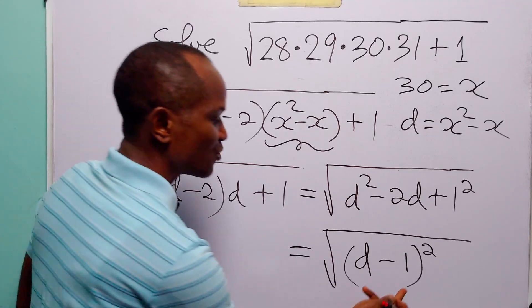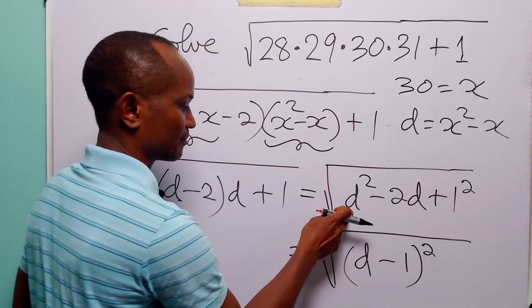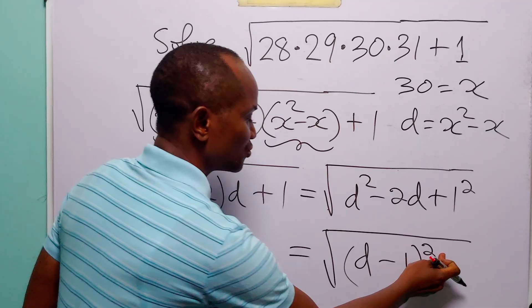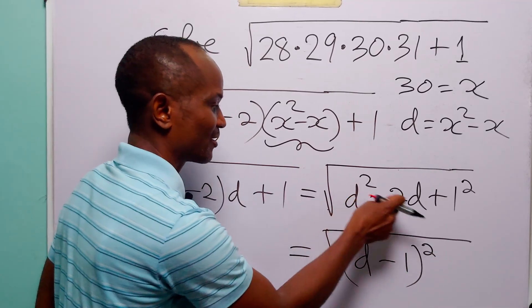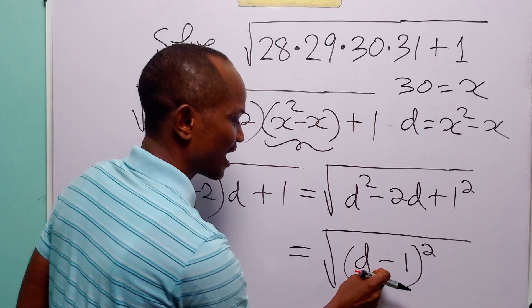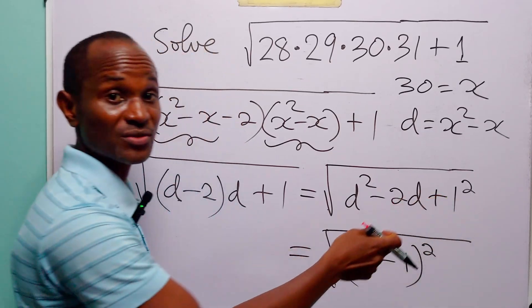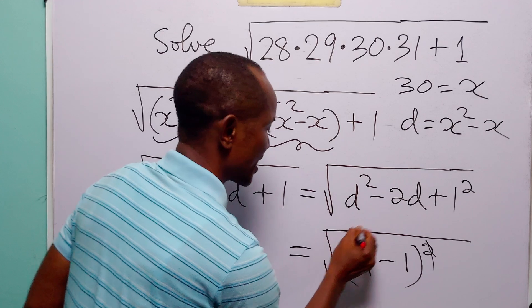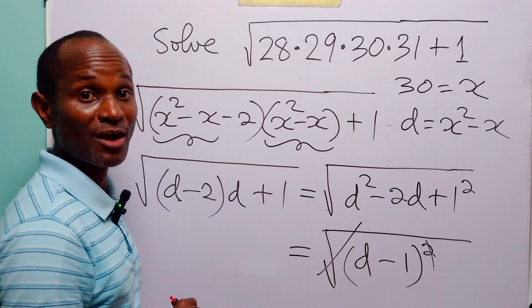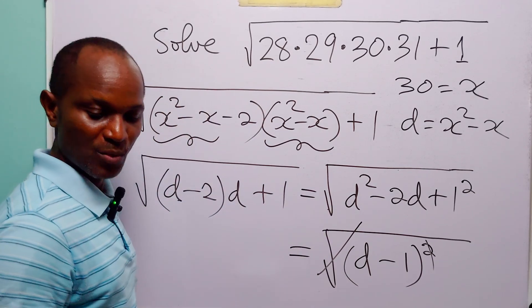Notice that this can be written as d minus 1 squared. Because of course if we expand this we are going to have d squared, 2 times d times minus 1, that is going to give us minus 2d. And then we have minus 1 squared which is going to give us that. But most importantly this square is now going to take care of the square root. And when we do that...